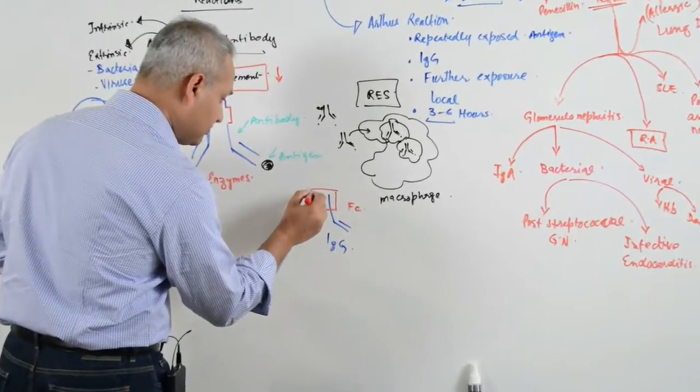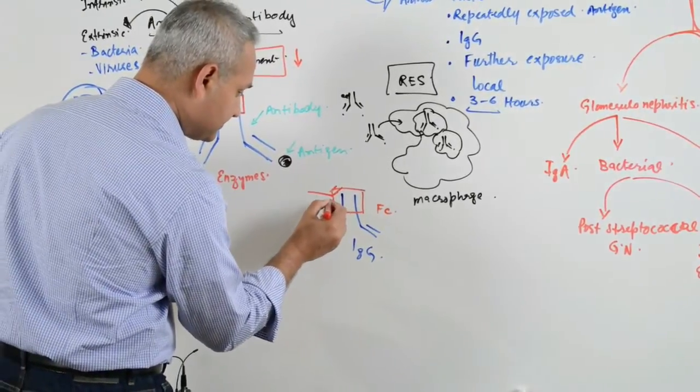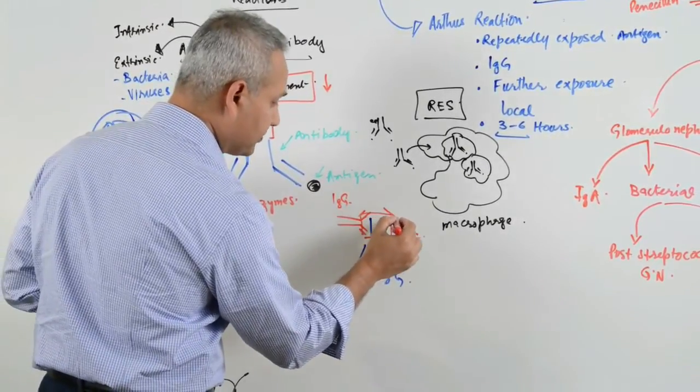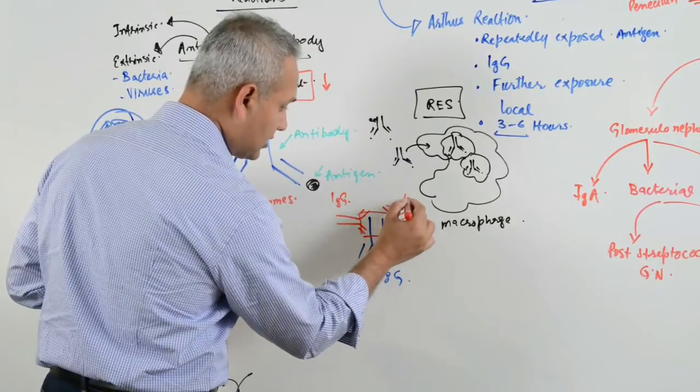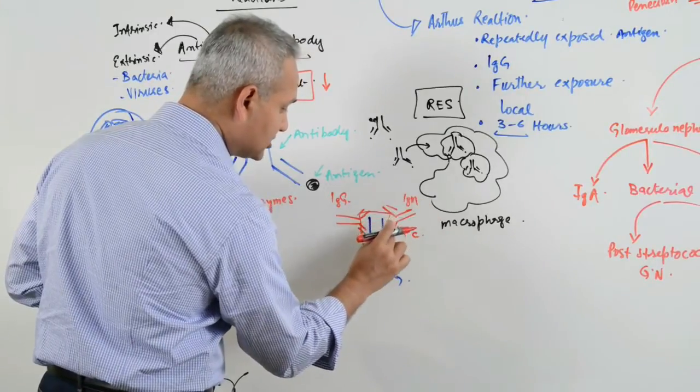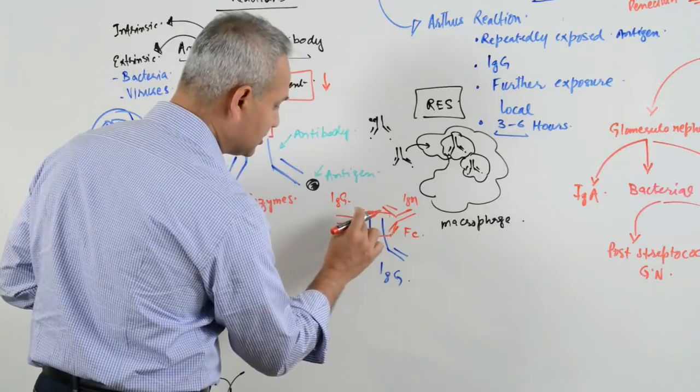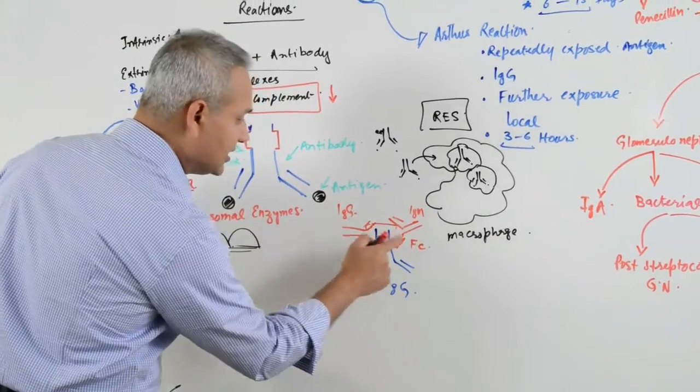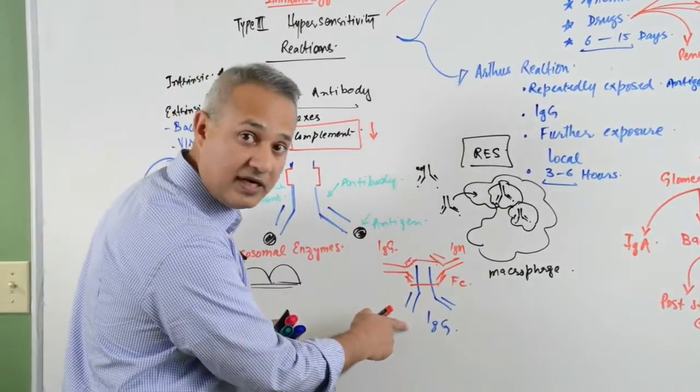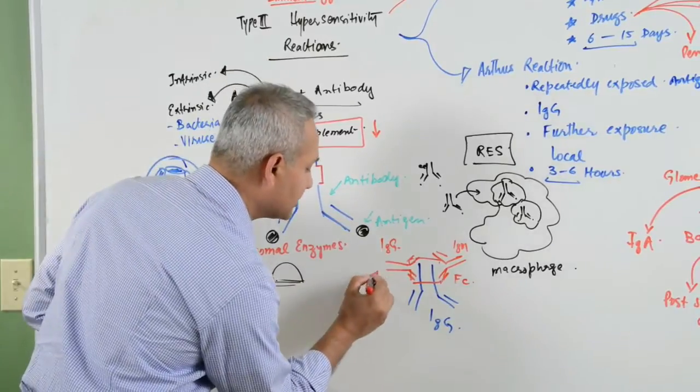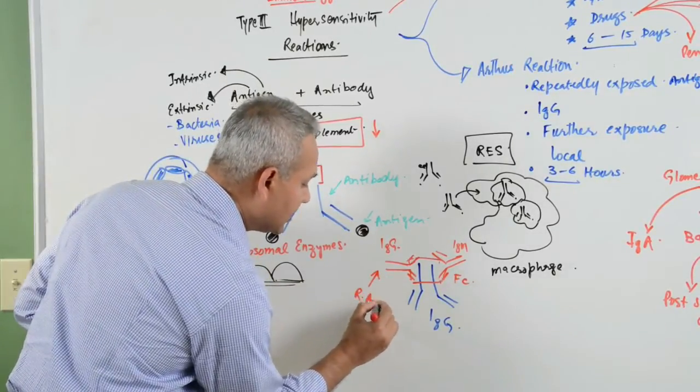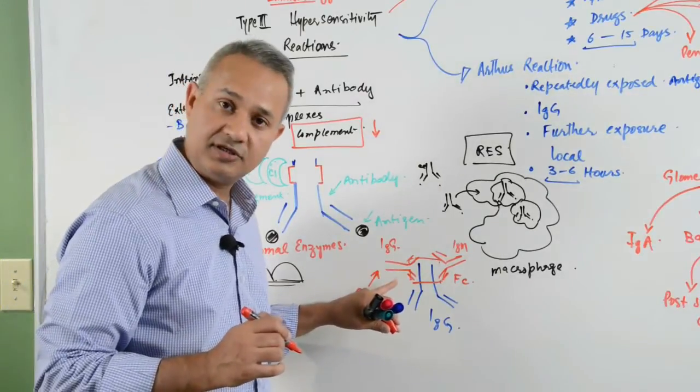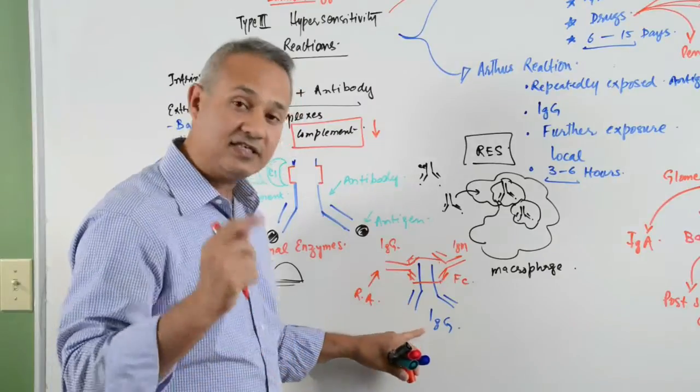Basically, these patients develop IgG and IgM against the Fc portion of the IgG. These IgG and IgMs that are produced against the normal IgG of the patient are called RA factor or rheumatoid arthritis factor.